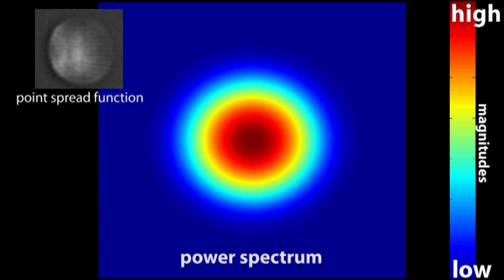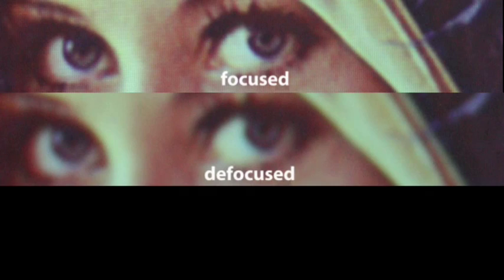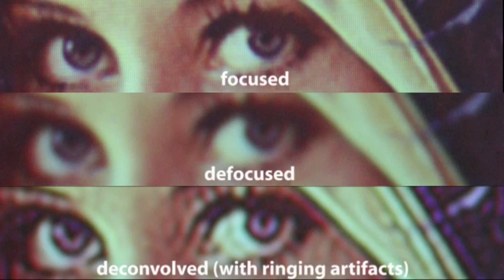The Gaussian point-spread function of common circular apertures, however, sets clear limitations for deconvolution. Divisions by very low Fourier magnitudes amplify certain frequencies too much and yield ringing in the deconvolved spatial images.